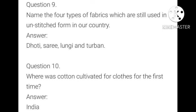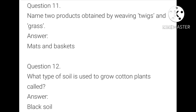Name the four types of fabrics still used in unstitched form. Dhoti. Products obtained by weaving twigs and grass include mats and baskets. What type of soil is used to grow cotton plants? Black soil — the cotton plants are grown in black soil.